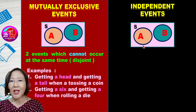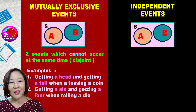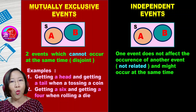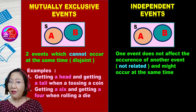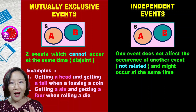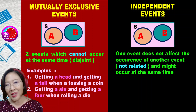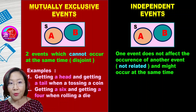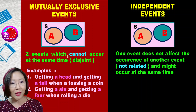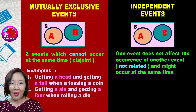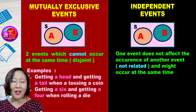As for independent events, there are also two events, but one event does not affect the other — they are not related. And they might occur at the same time. So for mutually exclusive, they cannot occur at the same time, because if you see a head on the coin, you don't see a tail.